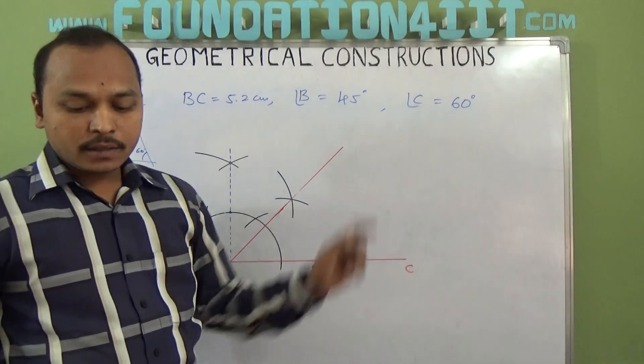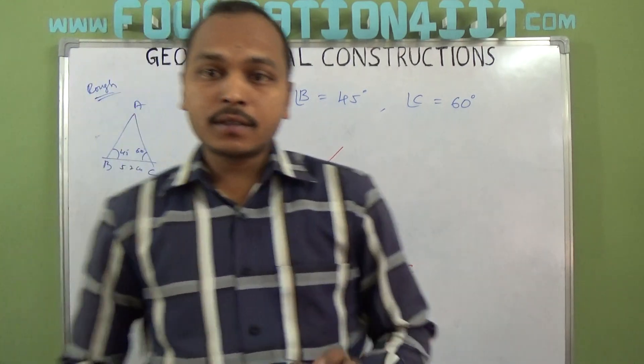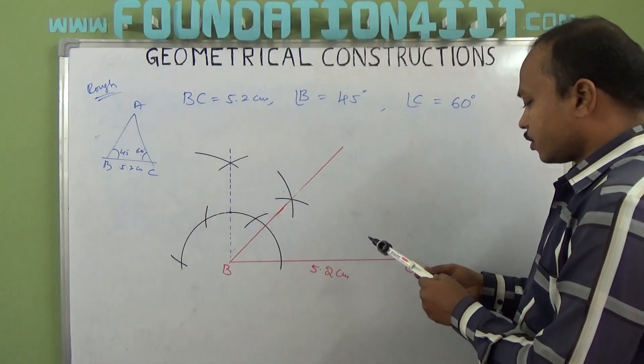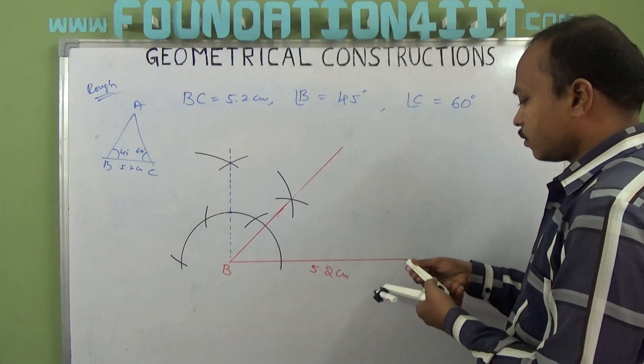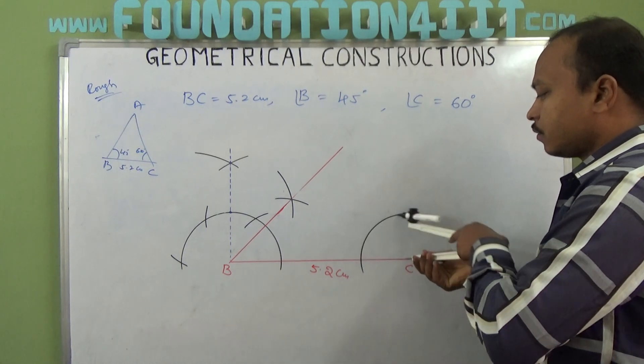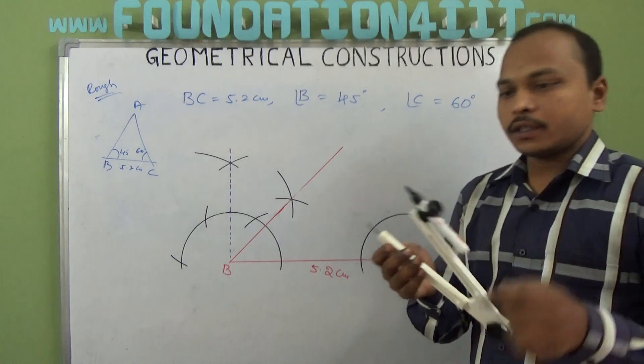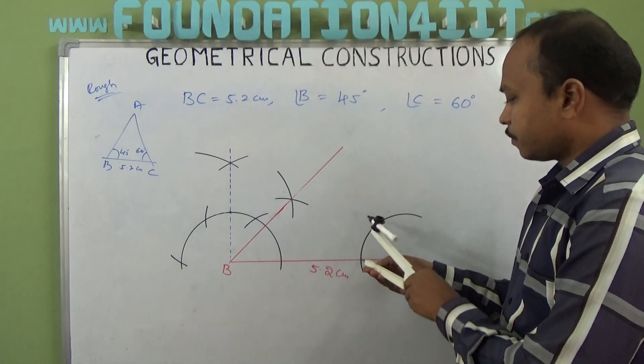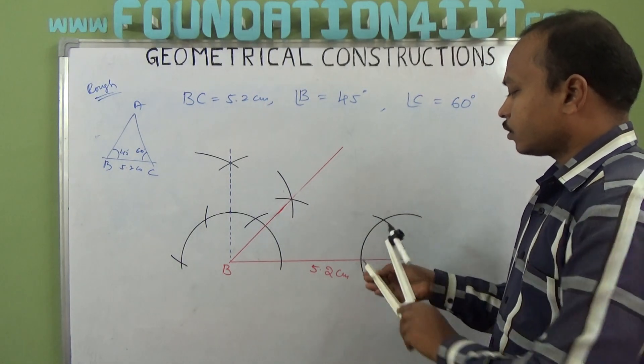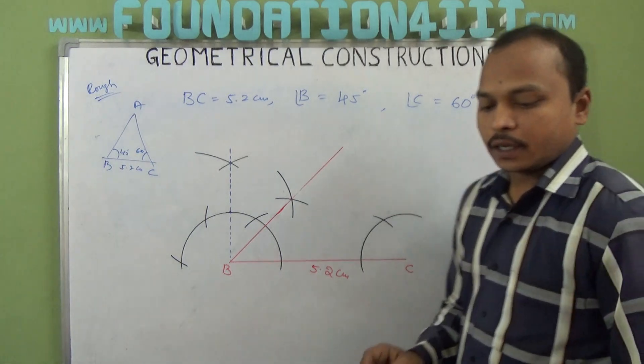At angle C, we need 60 degrees. For 60 degrees, first draw an arc from point C. Without changing the radius, from the point where the arc intersects BC, cut this arc. This gives a 60 degree angle.